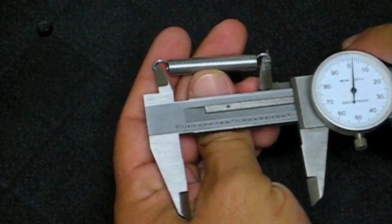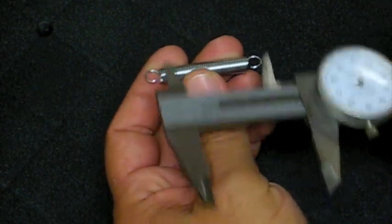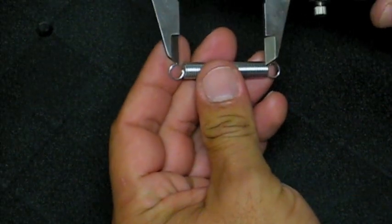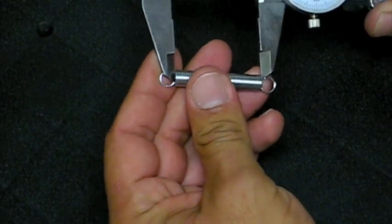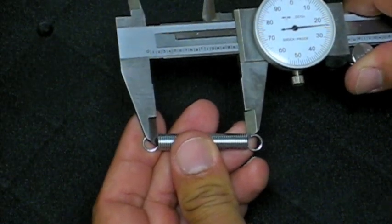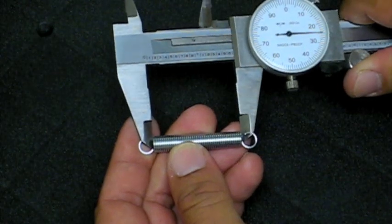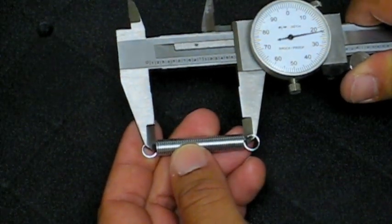Very important to measure from inside hook to inside hook. Now we're going to measure the body length of the spring. This particular spring has 1 inch 625 thousandths body length.